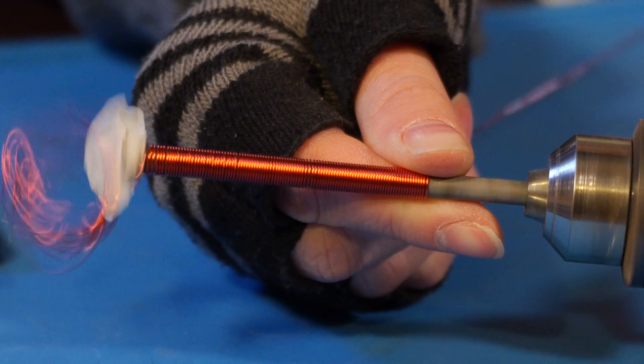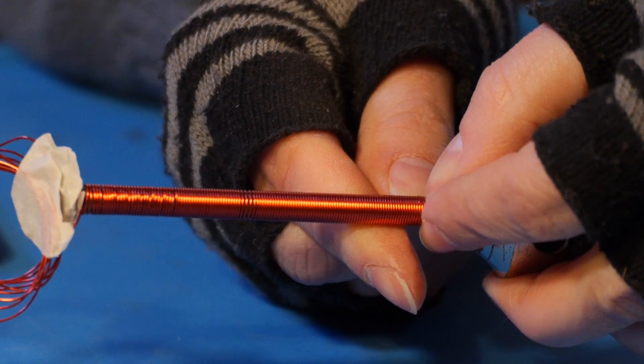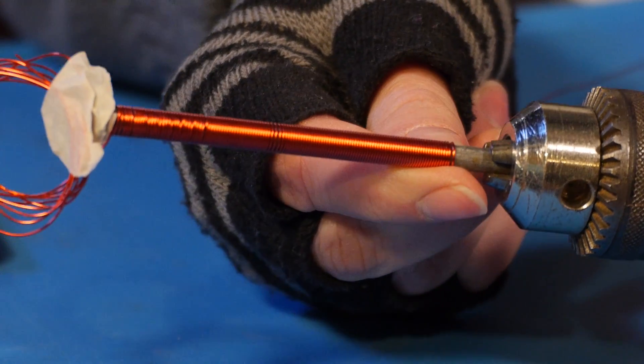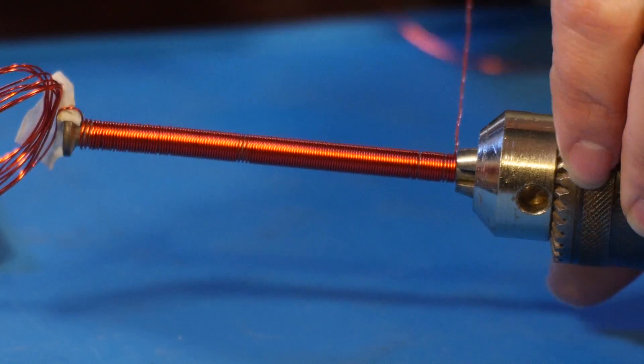You want to cover as much of the shaft of the nail as possible. Try to make sure that you don't overlap the wire at any point because it could interrupt your magnetic field and cause your electromagnet to not work.